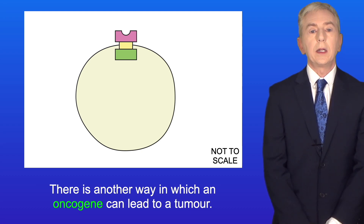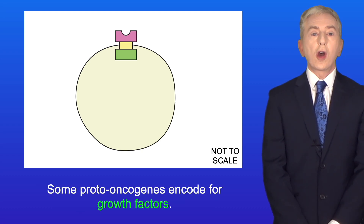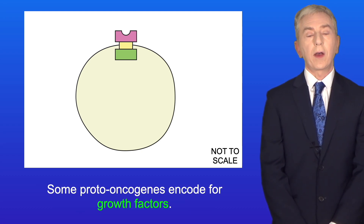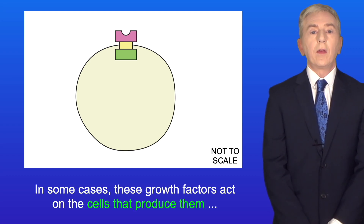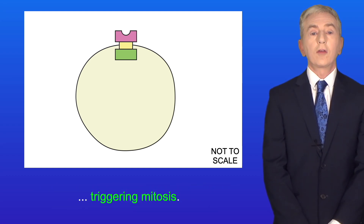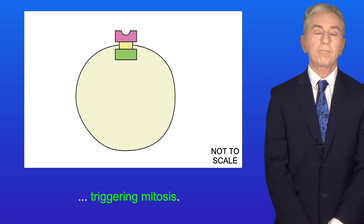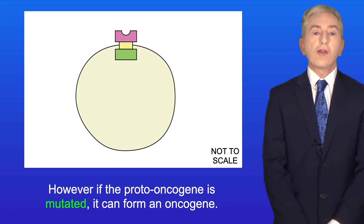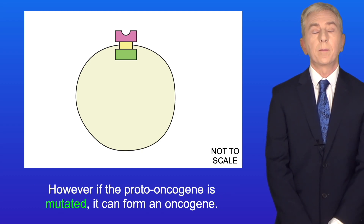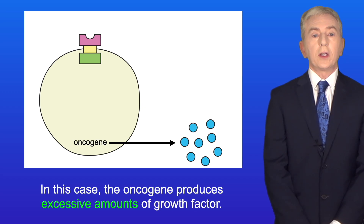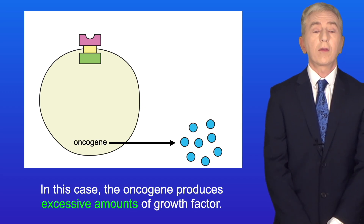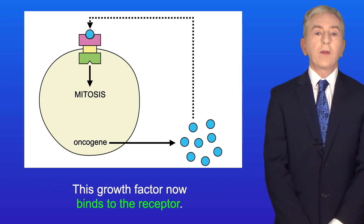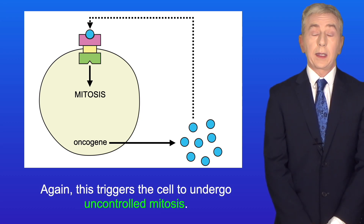There is another way in which an oncogene can lead to a tumour. Some proto-oncogenes encode for growth factors, and in some cases these growth factors act on the cells that produce them, triggering mitosis. Under normal conditions, the production of growth factor is tightly regulated. However, if the proto-oncogene is mutated it can form an oncogene, and in this case the oncogene produces excessive amounts of growth factor. This growth factor binds to the receptor and again triggers the cell to undergo uncontrolled mitosis.